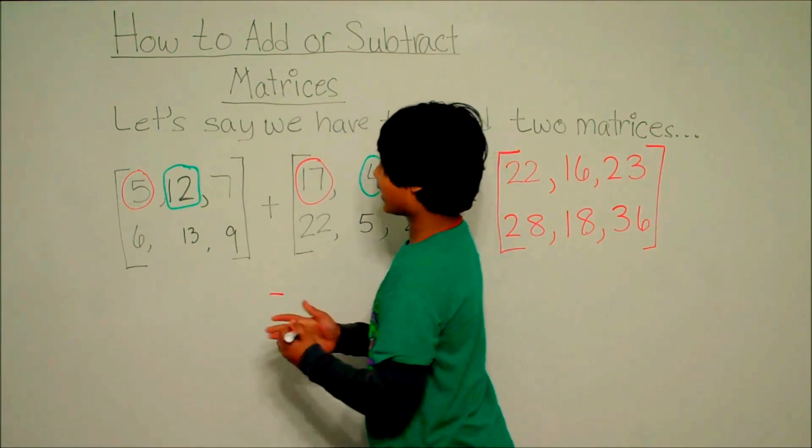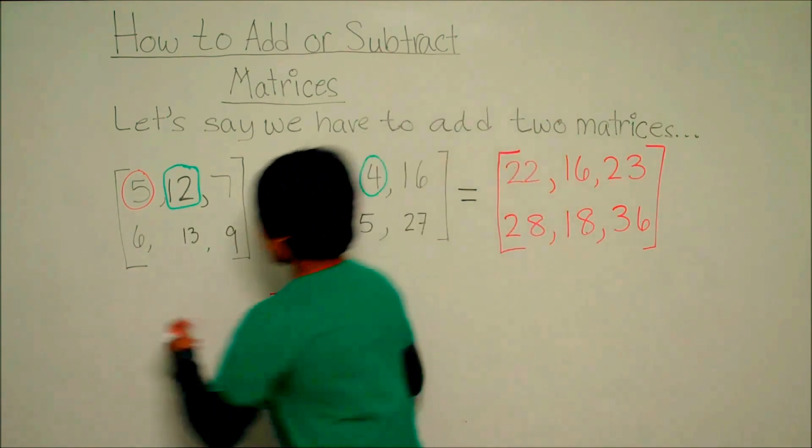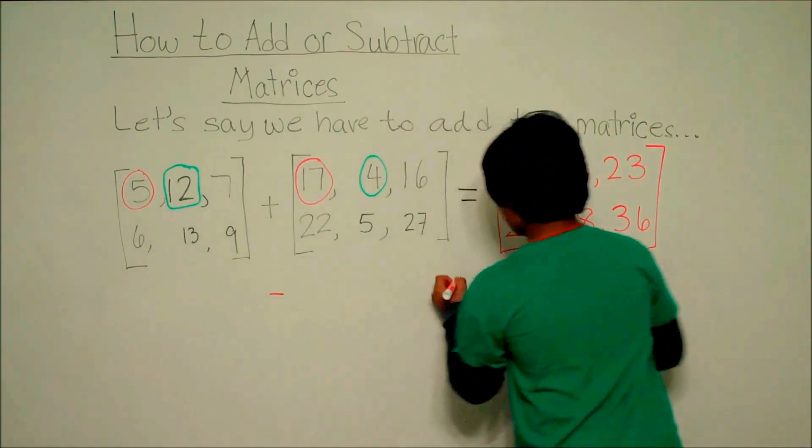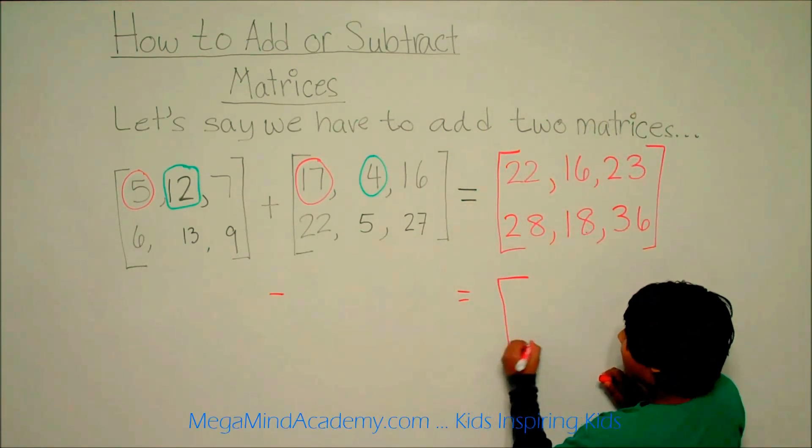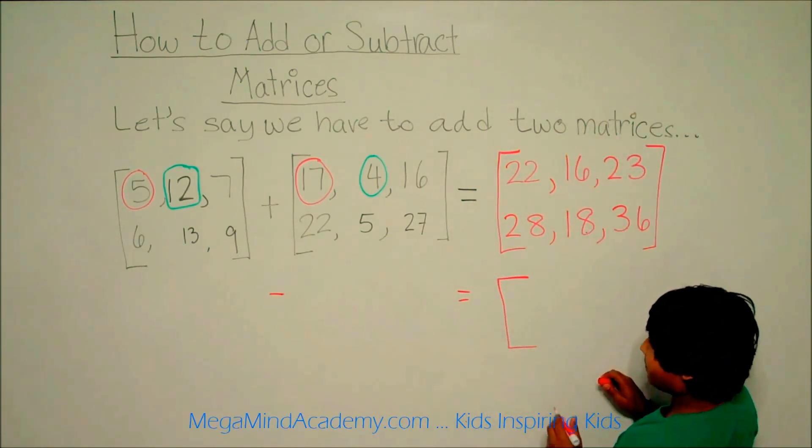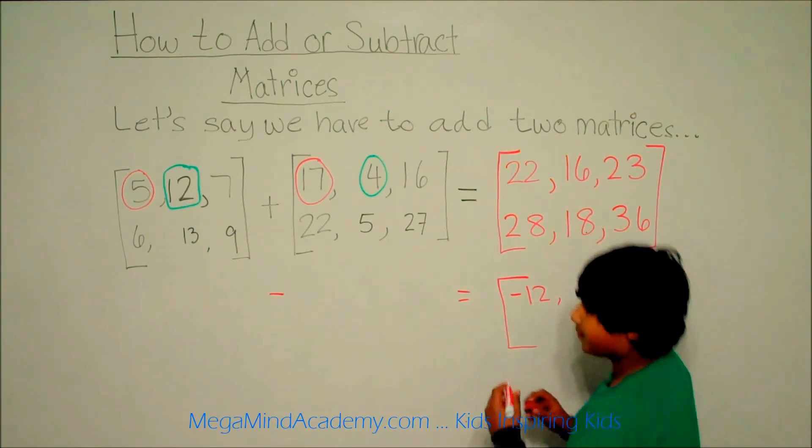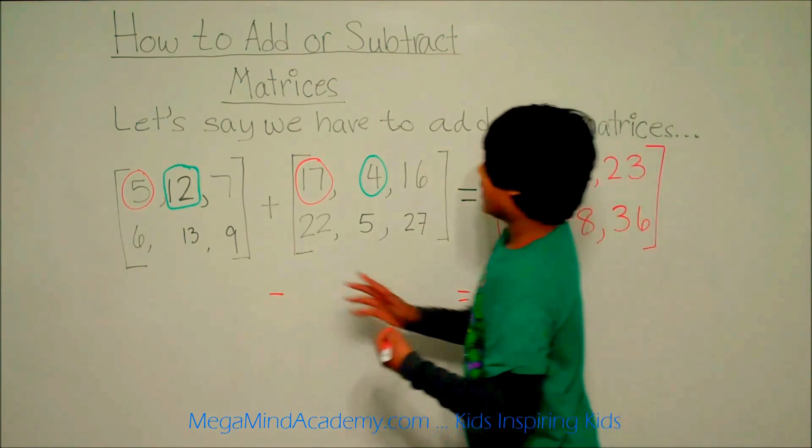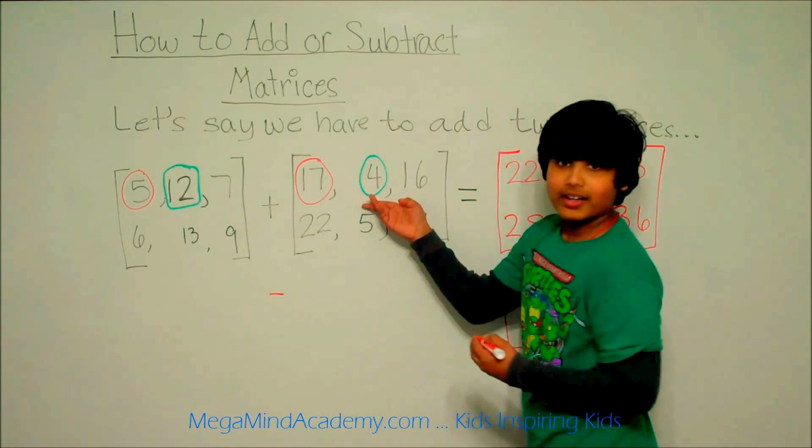So, we first subtract the two corresponding values, which are 5 and 17. So, 5 minus 17 is negative 12. And then, 12 minus 4 is 8.